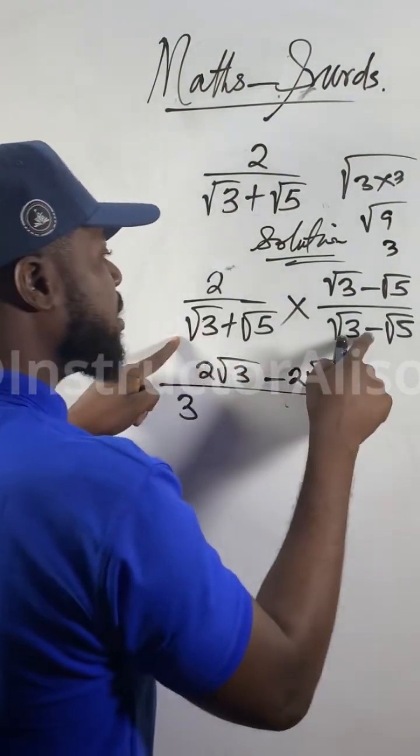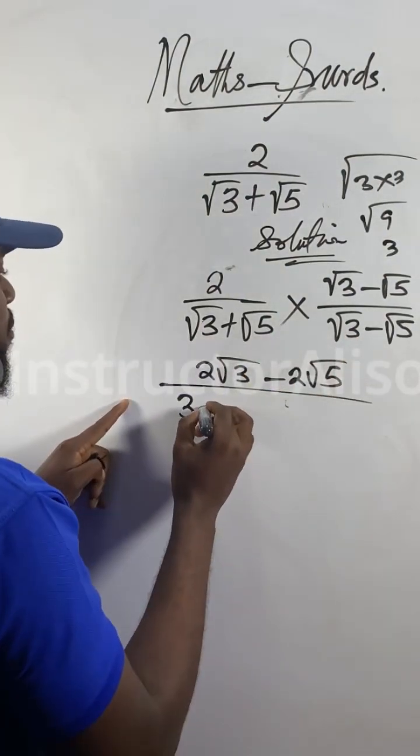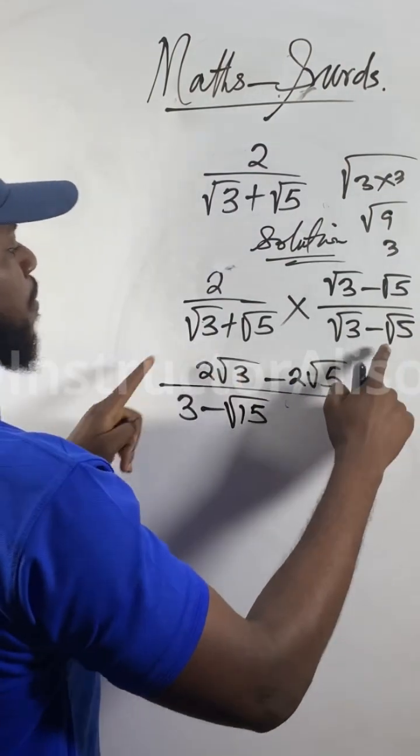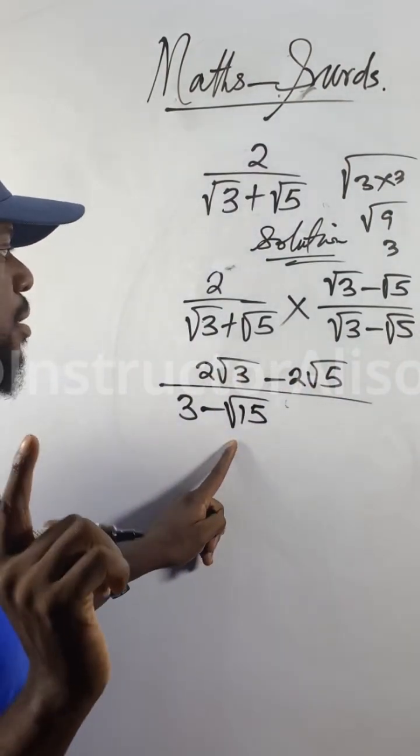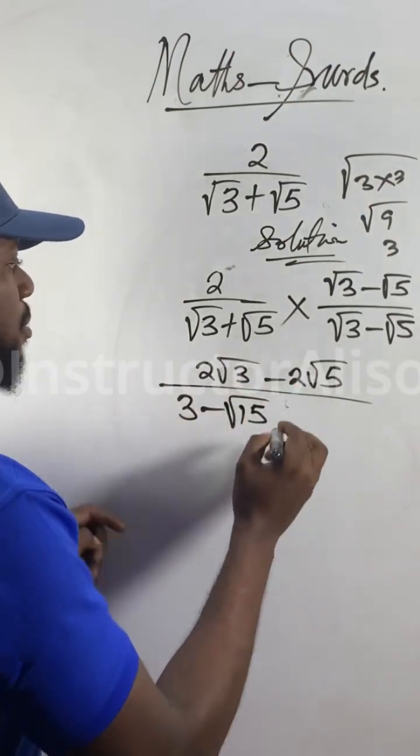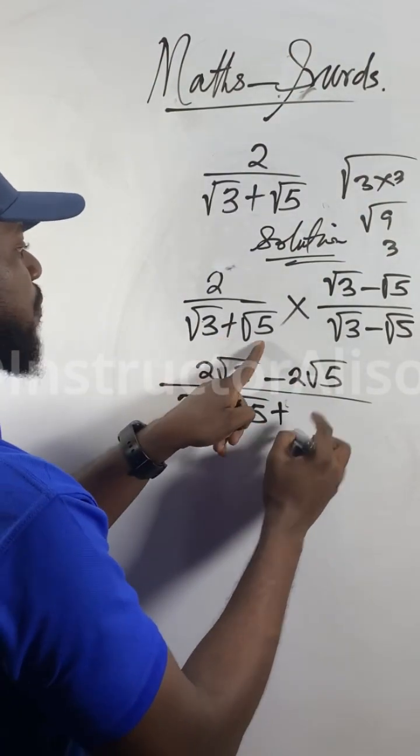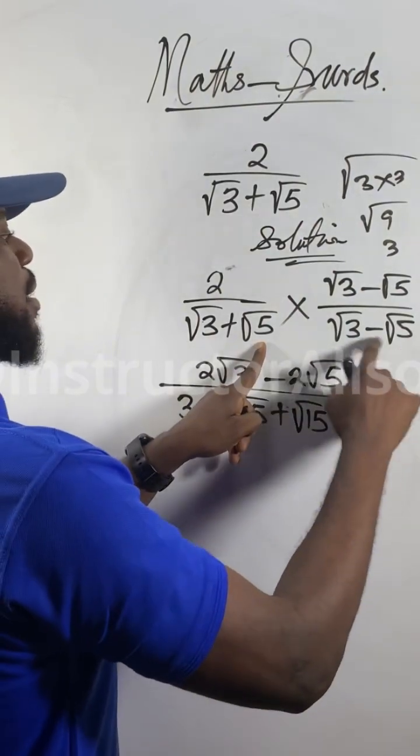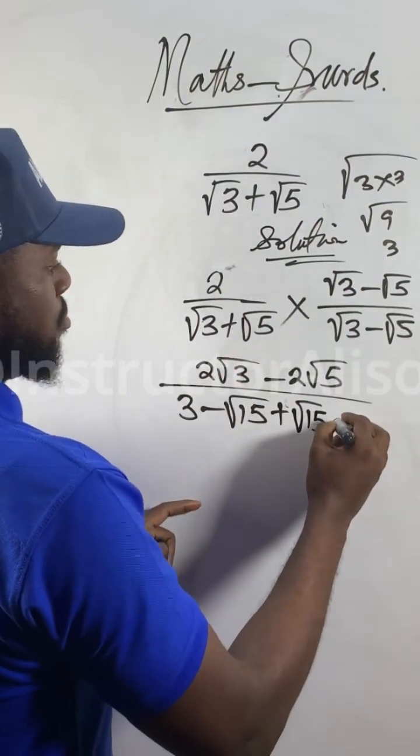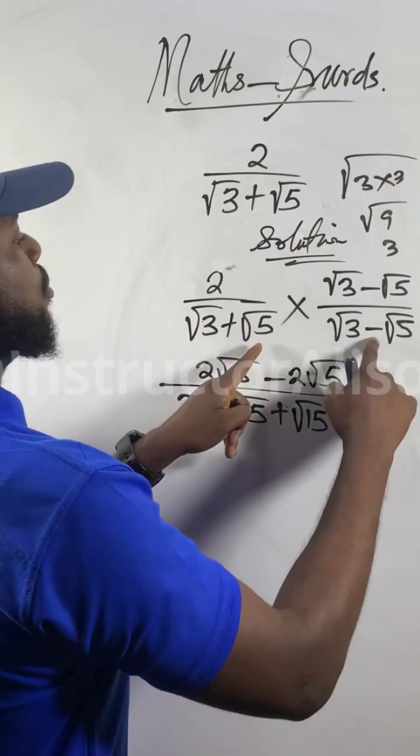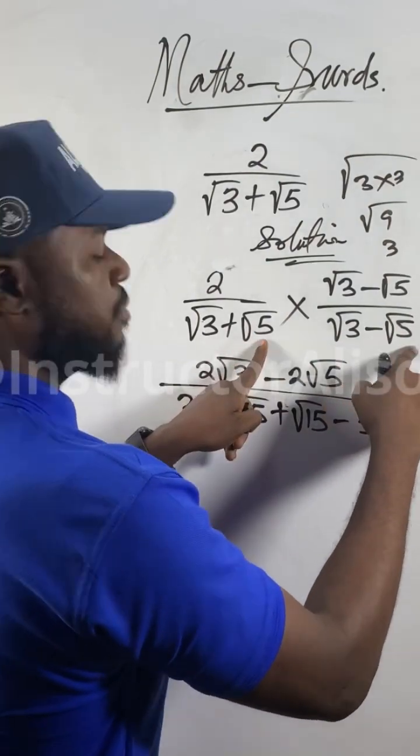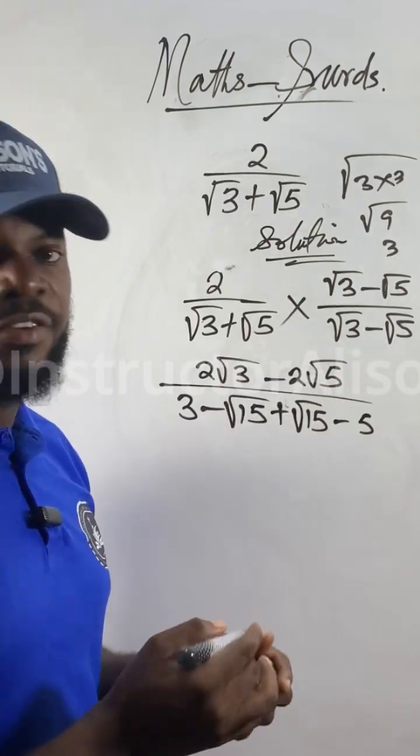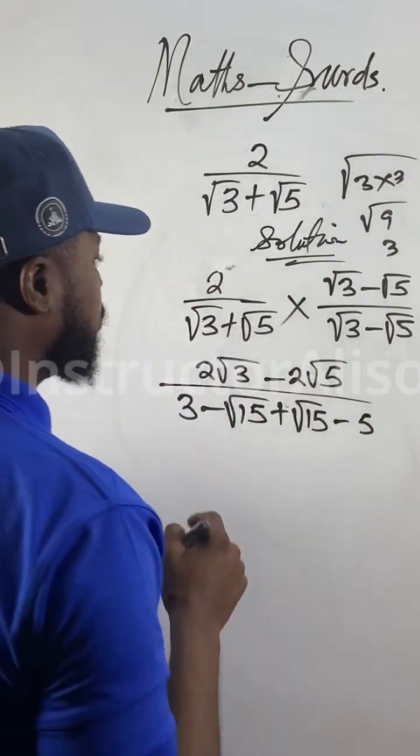Now, √3 times minus √5 will give us minus √15, because this guy will multiply by this one. Take one of the roots and 3 times 5. The same way there. Plus √5 times √3 will still give you √15. Then √5 times minus √5 will give us minus 5, because minus sign there, √5 times √5 is 5, plus times minus is minus.